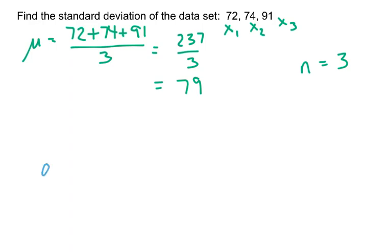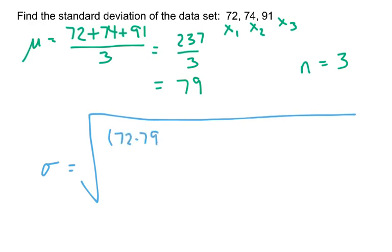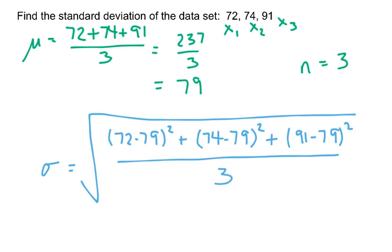I'm going to have sigma equals square root of... x sub one minus mu squared plus x sub two minus mu squared plus all the way to my last data point. Well, I only have one more, so that'll be x sub three minus the mean squared, all divided by the number of data points that I've got.